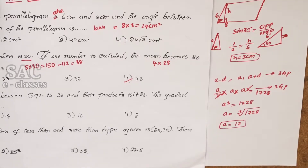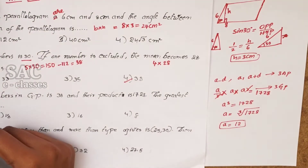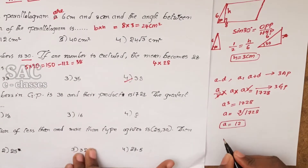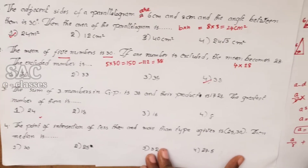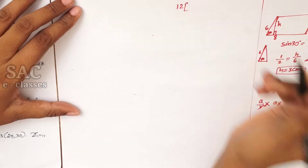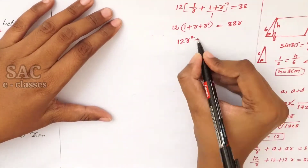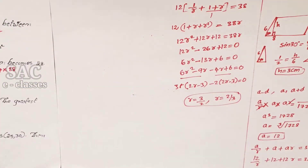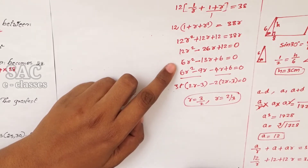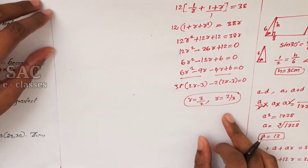Now use the sum condition. A/R + A + AR = 38. Substituting A = 12: 12/R + 12 + 12R = 38. Dividing by 12 and simplifying gives the quadratic 12R² − 26R + 12 = 0, or 6R² − 13R + 6 = 0. Factorizing gives R = 3/2 or R = 2/3.